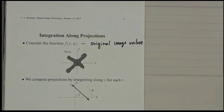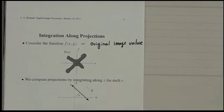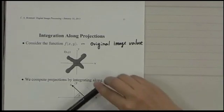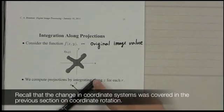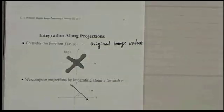Actually, this is the original image value. And then we compute projections by integrating along z for each r. So we are thinking about this line with angle theta, and then we take projections.